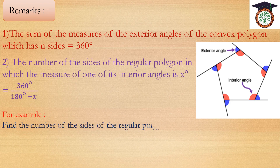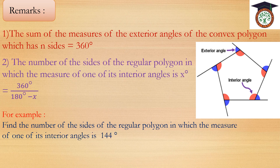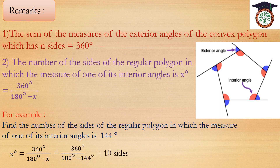For example, find the number of sides of the regular polygon in which the measure of one of its interior angles is 144 degrees. Using the formula: 360 over (180 minus x) equals 360 over (180 minus 144), which equals 10 sides.